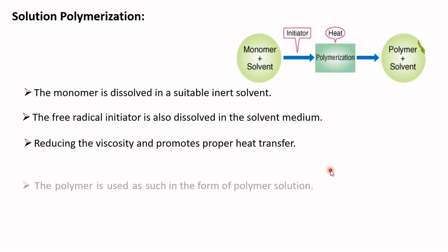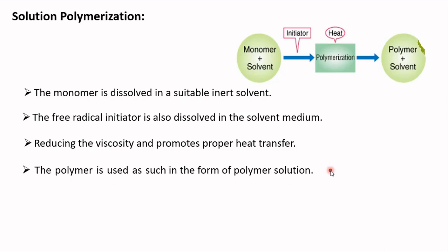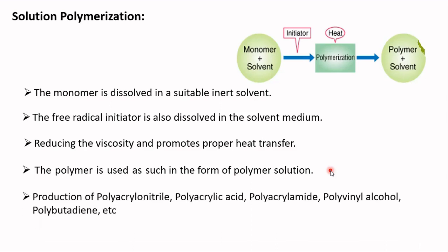After the reaction is over, the polymer is used as-is in the form of a polymer solution, or the polymer is isolated by evaporating the solvent. Polymers formed by this technique can be used for surface coatings. Examples of polymers prepared by solution polymerization include polyacrylonitrile, polyacrylic acid, polyacrylamide, polyvinyl alcohol, and polybutadiene.